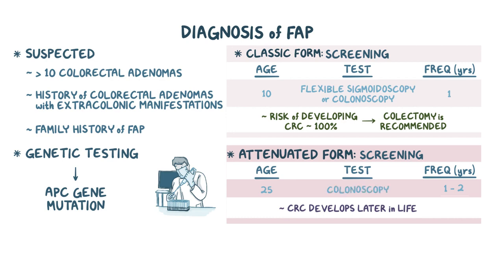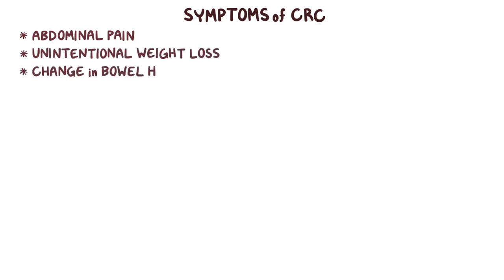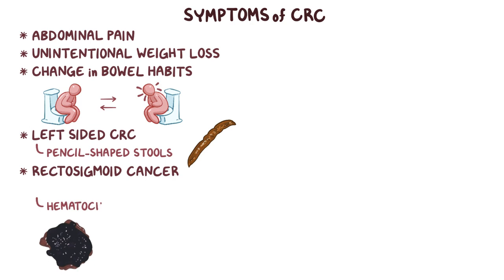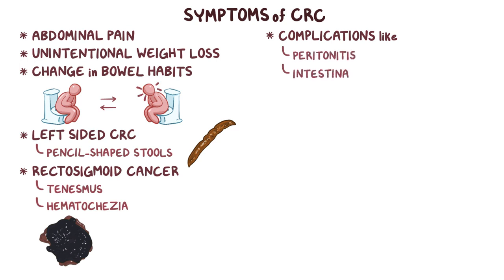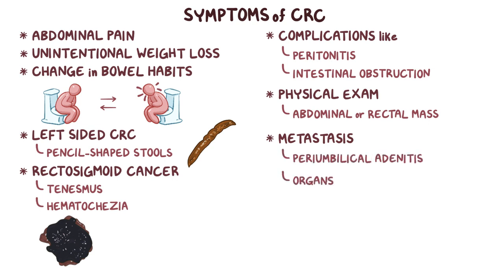In addition to identifying CRC through screening, it may also get diagnosed in individuals that develop symptoms like abdominal pain, unintentional weight loss, and a change in bowel habits — specifically, diarrhea alternating with constipation. Left-sided CRC is associated with pencil-shaped stools, and rectosigmoid cancer is associated with hematochezia and tenesmus. CRC can also cause complications like peritonitis or intestinal obstruction. On physical examination, sometimes an abdominal or rectal mass can be felt. A classic sign of metastasis is periumbilical adenopathy, and metastasis usually goes to the liver, followed by the lungs and bones.